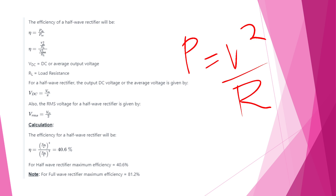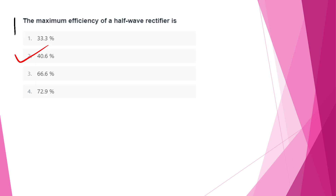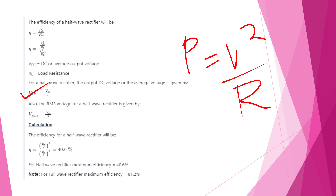For a half-wave rectifier, VDC = Vm/π and Vrms = Vm/2. Substituting into the efficiency formula gives 40.6%. For a full-wave rectifier, the efficiency is double: 81.2%.